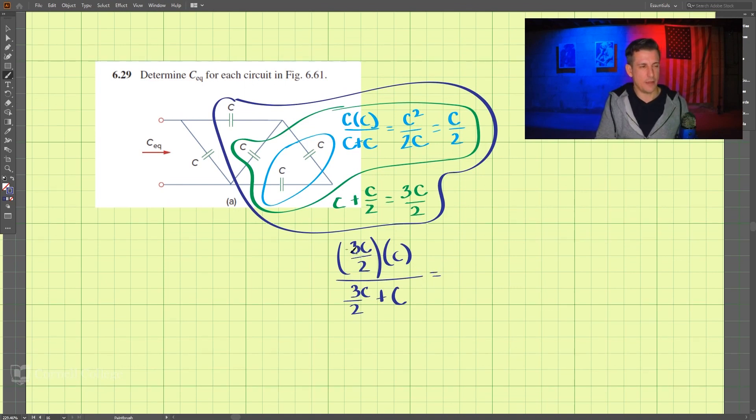So we get 3C divided by 2 times C divided by 3 over 2C plus C. The top here is 3C squared divided by 2, and the bottom here is 5 divided by 2C. So the 2's cancel, the 2's cancel here.